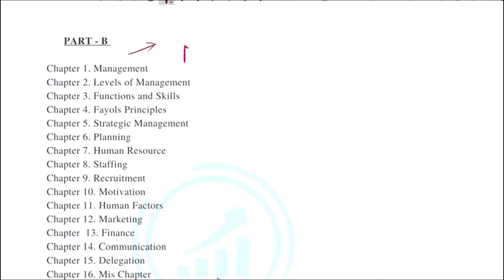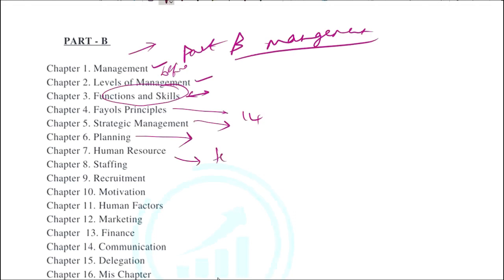Moving to Part B, which completely focuses on management. The chapters covered are: management definitions and concepts, levels of management and their functions, managerial skills, the 14 Fayol principles, then strategic management, planning, HR, staffing, recruitment, motivation, human factors, marketing, finance, communication.